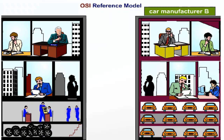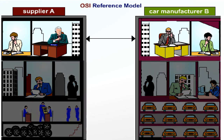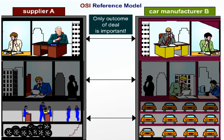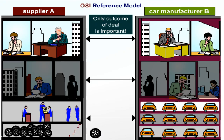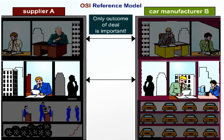A car manufacturer B orders 1,000 tyres from supplier A. This deal is concluded and signed by two managers at the highest level. For the two managers, only the outcome of this business deal is important. The process that takes place in the lower hierarchy to get the tyres from the supplier to the car manufacturer does not interest them. The managers rely on their purchasing and sales departments, which will deal with practical details.